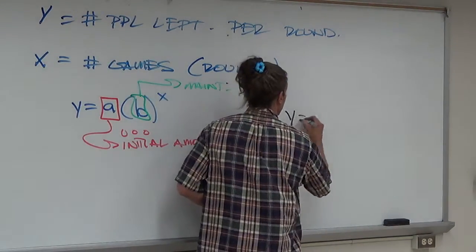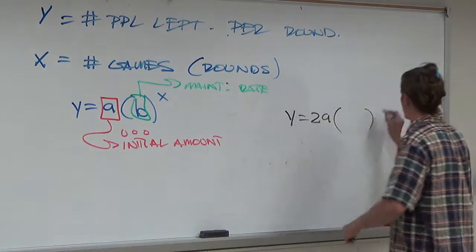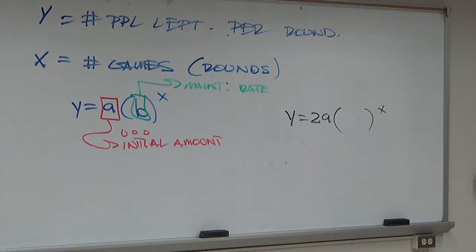So, that means y equals 29 times something to the x power, something to the x power.